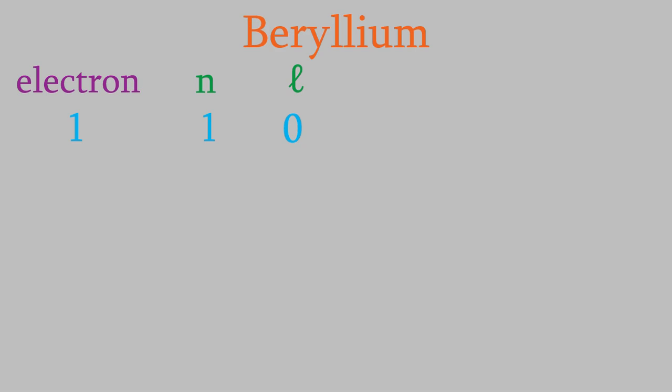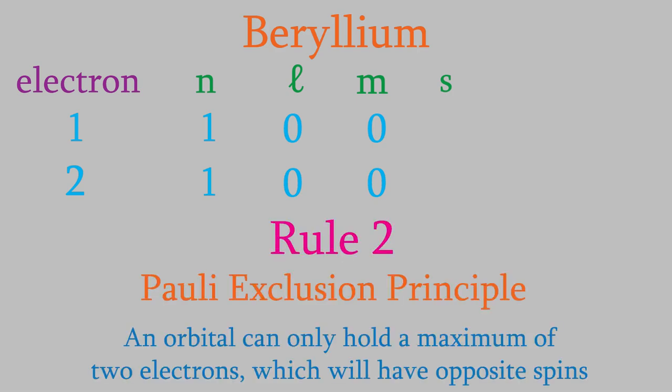For that first electron, the quantum number m must be zero. The second electron also wants the lowest possible energy, so it'll have n equals 1 and l equals zero — also in a 1s orbital — and m must be zero. Now let's think about the spin quantum number s. Remember, the Pauli exclusion principle tells us that when an orbital contains two electrons, they must have opposite spins. So even though we don't know which electron has spin negative one-half and which has positive one-half, both possibilities are covered. Let's say the first is negative one-half and the second is positive one-half.